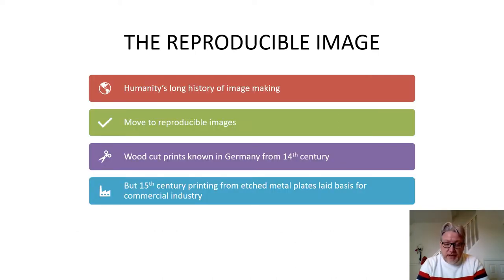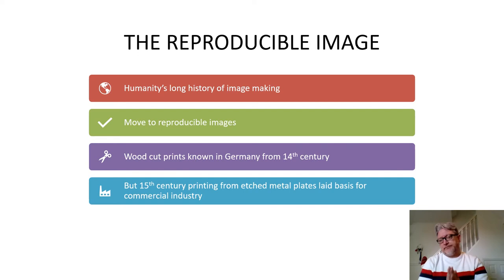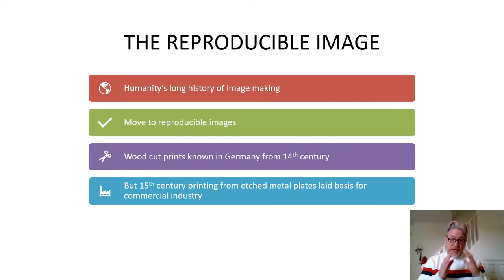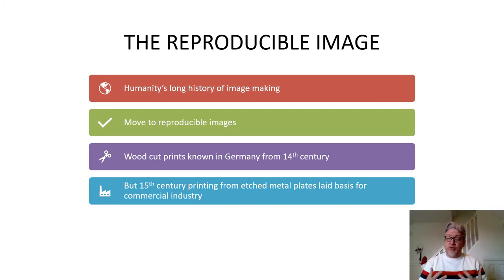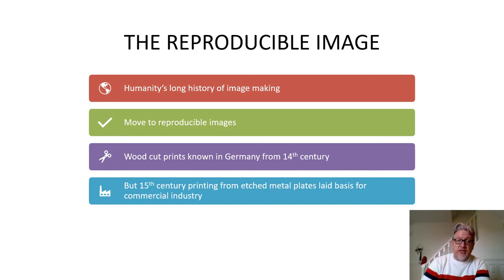Obviously, humanity has a long, long history of image making, going back to when we were living in caves and making paintings and drawings to represent the world around us. As long as human beings have been able to walk and move, they have been making images of the world around them. With the printing press, we see a move to reproducible images — you make one image and you can produce it again and again.